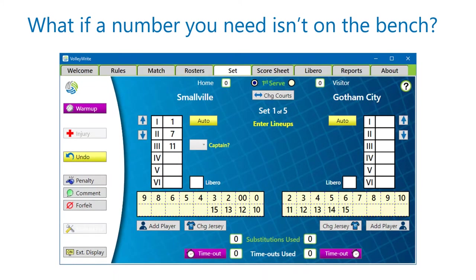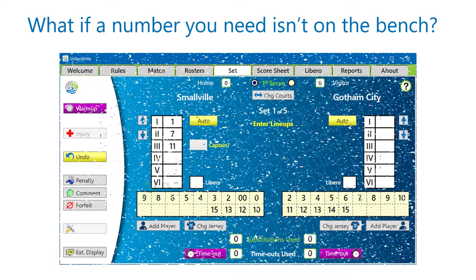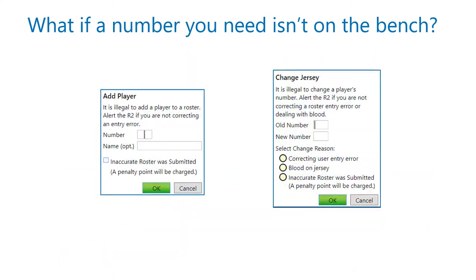When a lineup includes a number which is not shown on the bench, you can use the Add Player or Change Jersey buttons to correct any mistakes you made when you entered the roster. Otherwise, you should check with your R2 in case a penalty would apply.